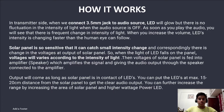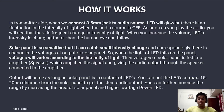The solar panel is so sensitive that it can catch small intensity changes, and correspondingly there is a change in the voltage at the output of the solar panel. So when the light of the LED falls on the panel, the voltage will vary according to the intensity of light. Then the voltage of the solar panel is fed into the amplifier, which amplifies the signal and gives audio output through the speaker connected to the amplifier.